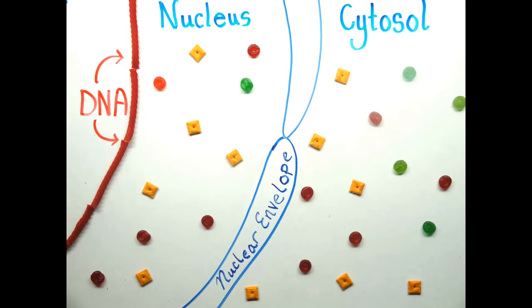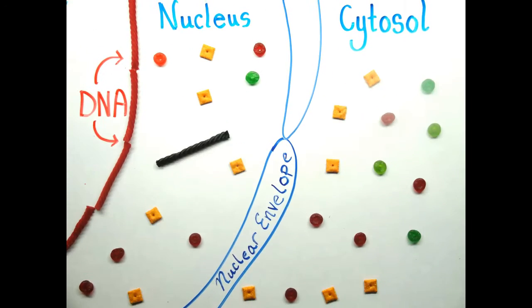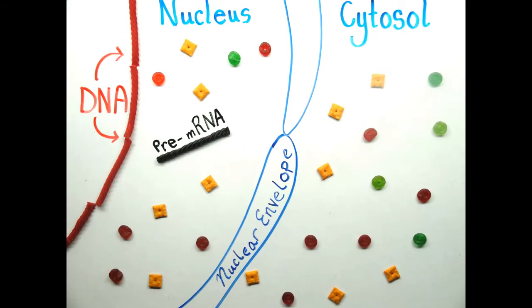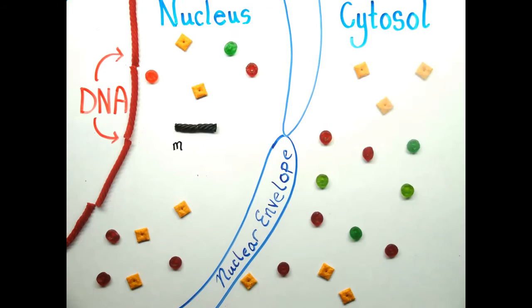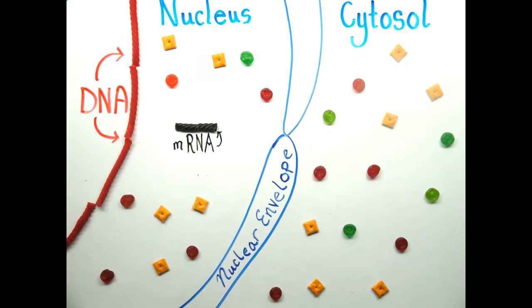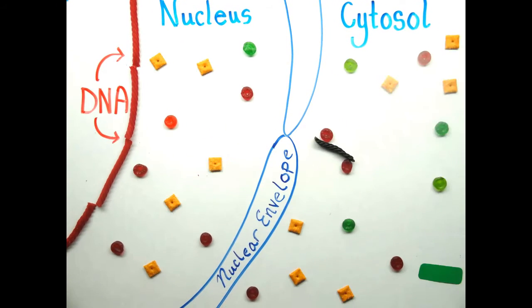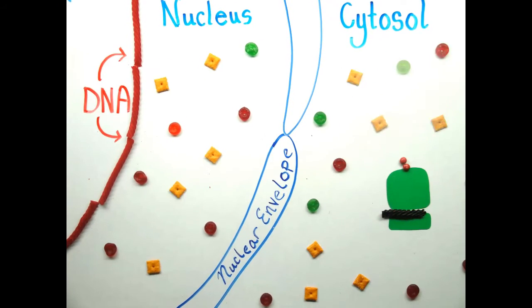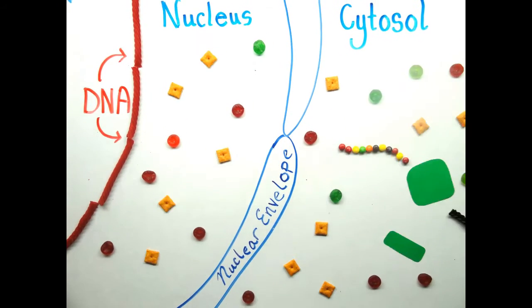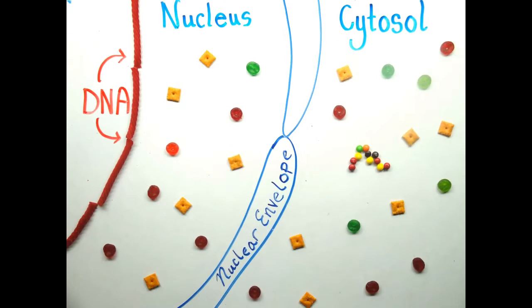The first control of gene expression is transcriptional. Then comes RNA processing control, when pre-mRNA is alternatively spliced. Next is control of RNA transport and localization. Then RNA is either degraded or translated. And finally, you have post-translational control.